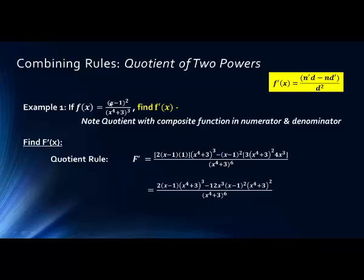The derivative of the numerator uses outer and inner (Chain Rule): bring the exponent 2 down in front, giving 2(x minus 1) to the first power, times the derivative of the inner, which is 1. That whole piece times the denominator (x to the fourth plus 3) cubed. Then subtract the numerator (x minus 1) squared times the derivative of the denominator — another Chain Rule: 3 comes down, (x to the fourth plus 3) stays, exponent becomes 2, times the derivative of the inner 4x cubed — all over the denominator squared, which gives (x to the fourth plus 3) to the sixth.